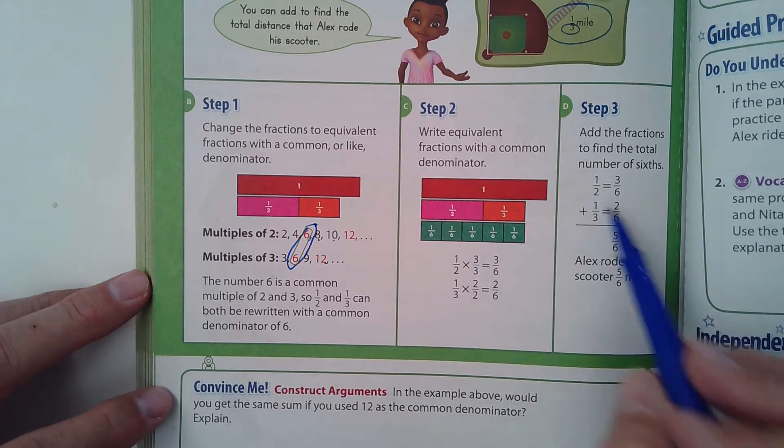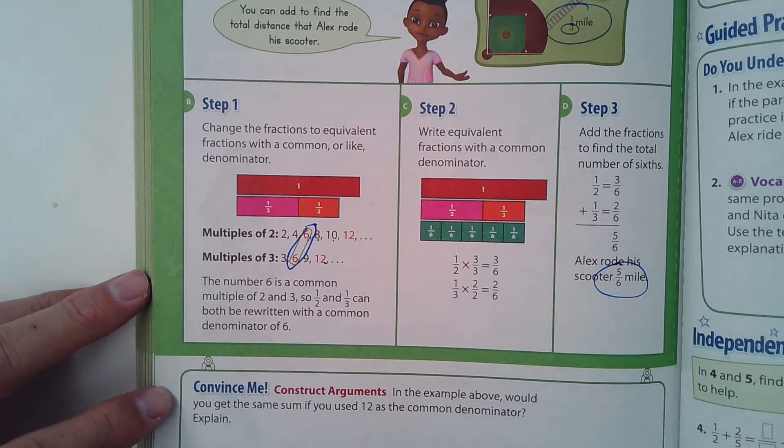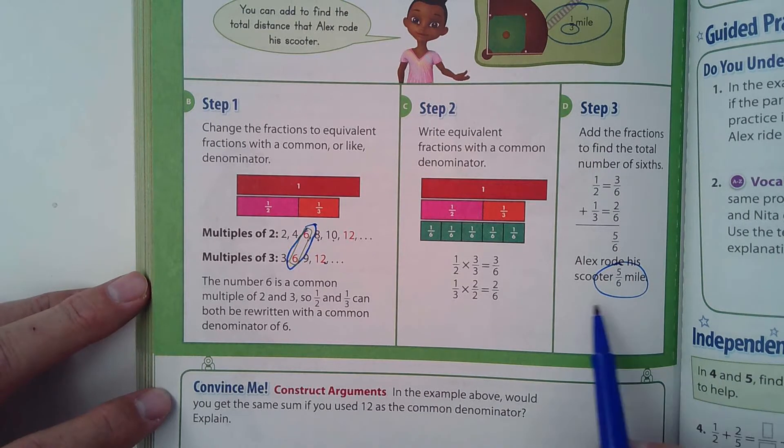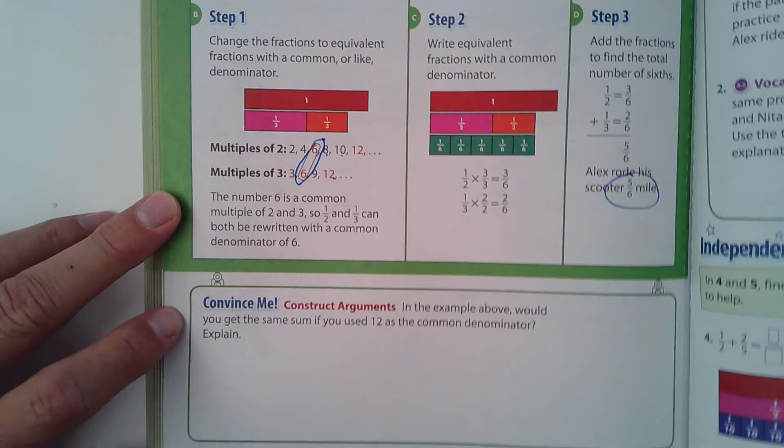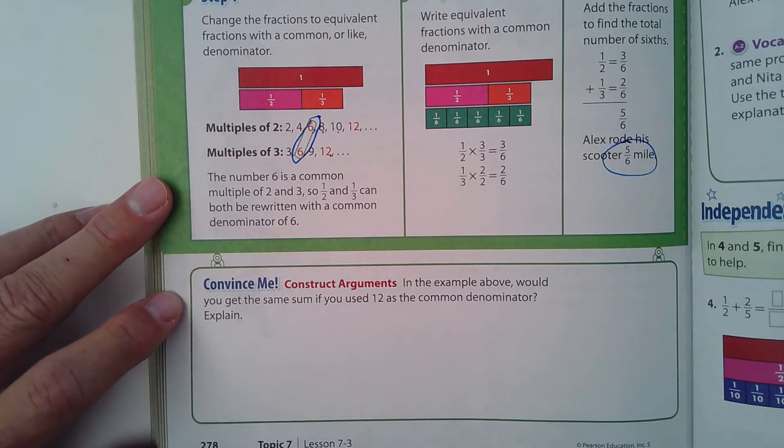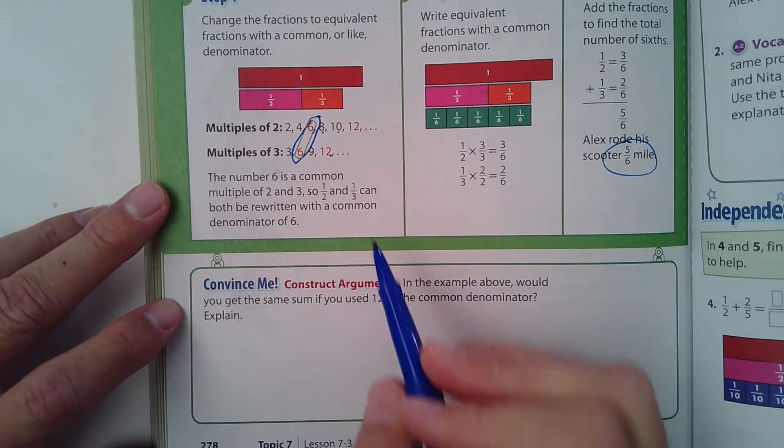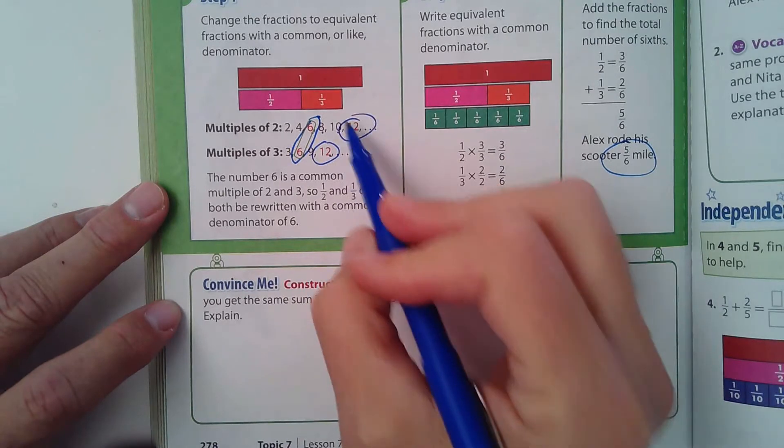Then they go ahead and add that, and we come up with that he rode five-sixths of a mile. Then in the Convince Me section down here, they ask what would happen if they use 12, because 12 was also one that we came across.